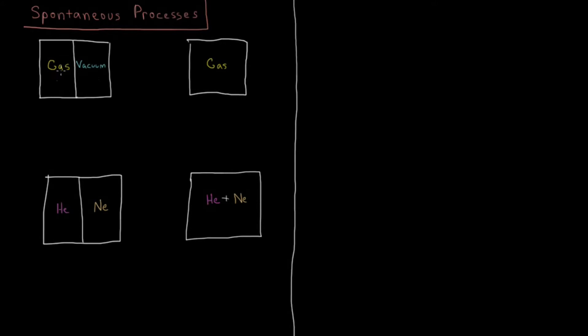So in the first scenario we have a gas which is half on the left of the container, then there's a partition and vacuum on the other side, and over here the partition is moved up and it's just gas everywhere.